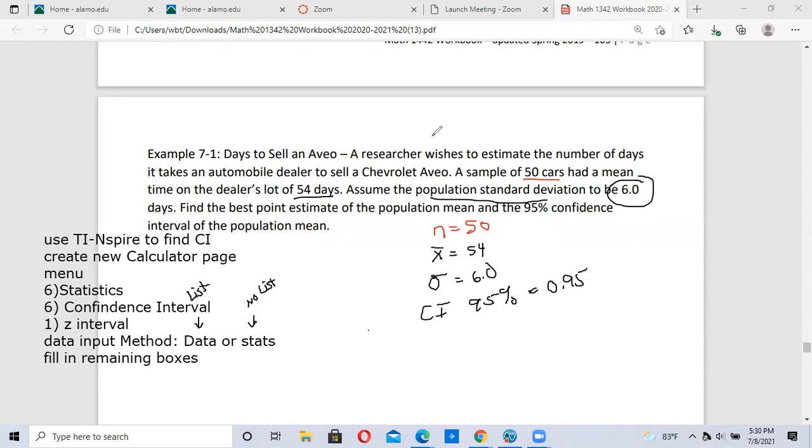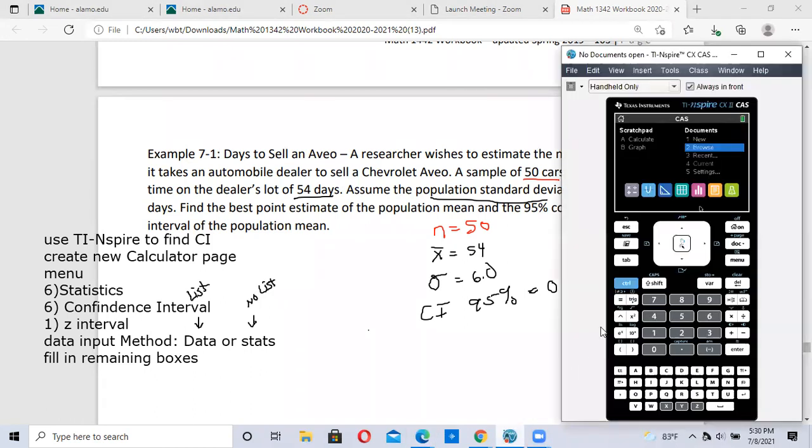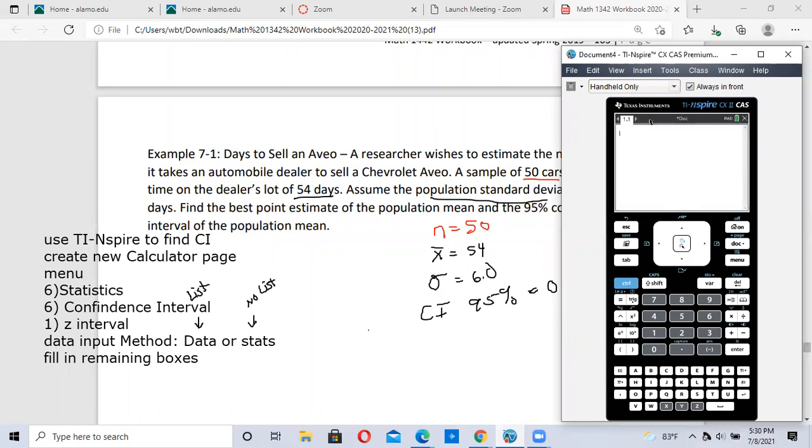Looking at this problem, we do not have a list of data - everything has been given to us. We're going to create a new calculator page, click on the menu button, number 6 statistics, number 6 confidence interval, number 1 Z interval. Since we don't have a list of data, we change this to stats, then click OK and fill in the remaining boxes.